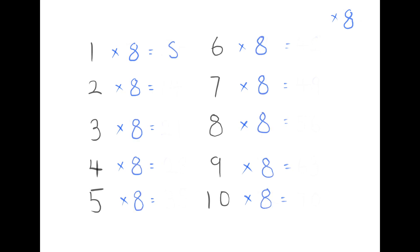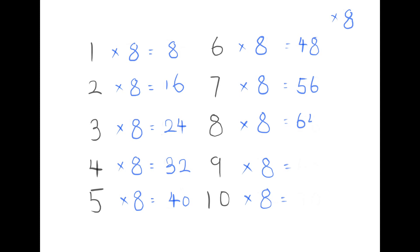1×8 is 8, 2×8 is 16, 3×8 is 24, 4×8 is 32, 5×8 is 40, 6×8 is 48, 7×8 is 56, 8×8 is 64, 9×8 is 72, 10×8 is 80.